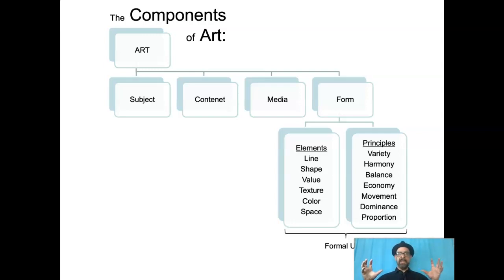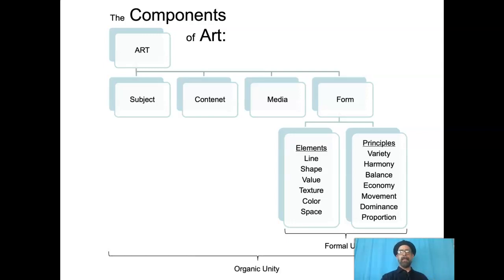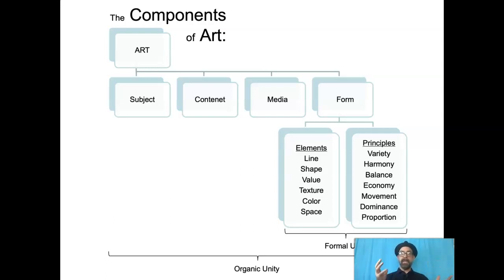When a work of art has the elements and principles working together, that work of art is said to have formal unity — it's just beautifully put together, beautifully crafted, good decisions about those elements and how they're organized. But what we're really shooting for is organic unity: that's when all of it works together — subject, content, media, form — everything working together. The thing is said to have organic unity; it almost has a life of its own. It's beautiful and thought-provoking and just makes a connection.